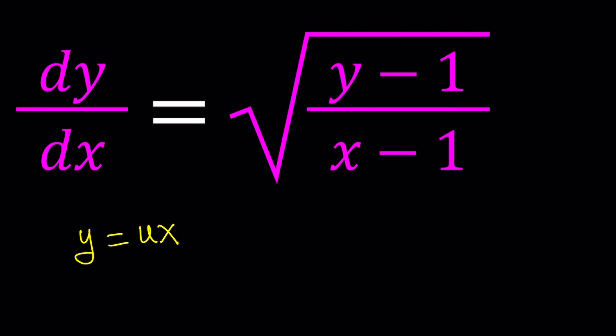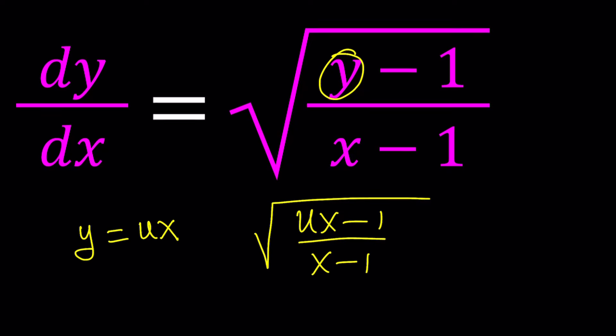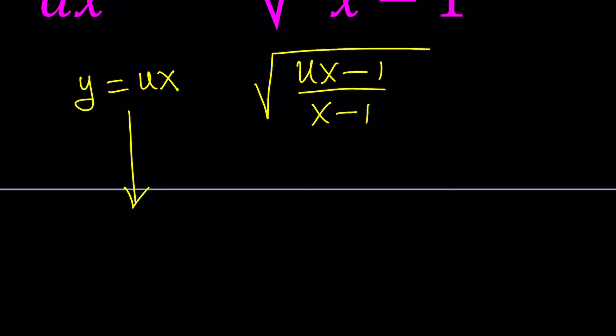If y is equal to ux, you're going to replace y with ux here, ux minus 1, and then you're going to have x minus 1 under the radical. Is this expression going to simplify to something nicer? So, we can give it a try. First of all, what is dy over dx if y is equal to ux? We need to think about differentiating both sides. Let's go ahead and do that first, and then we'll get back to the radical.